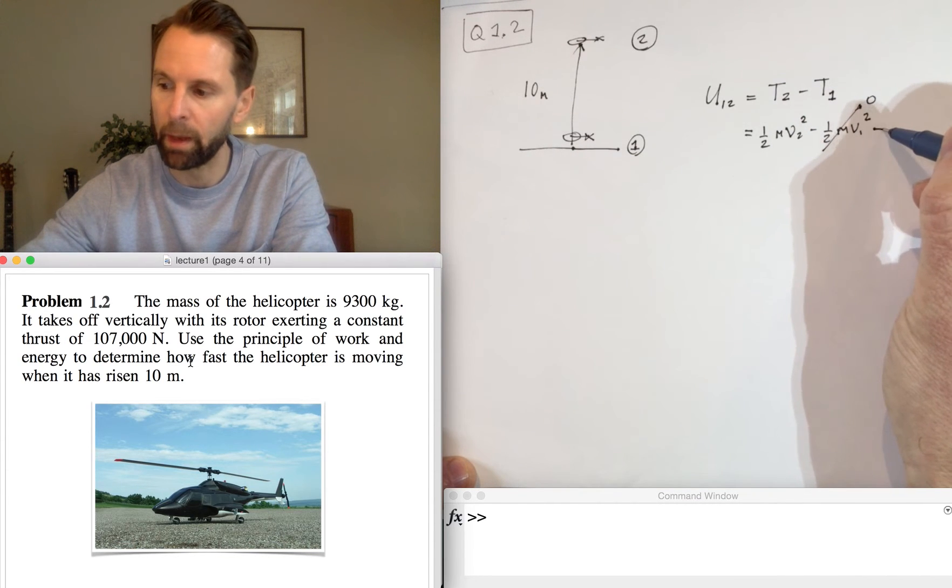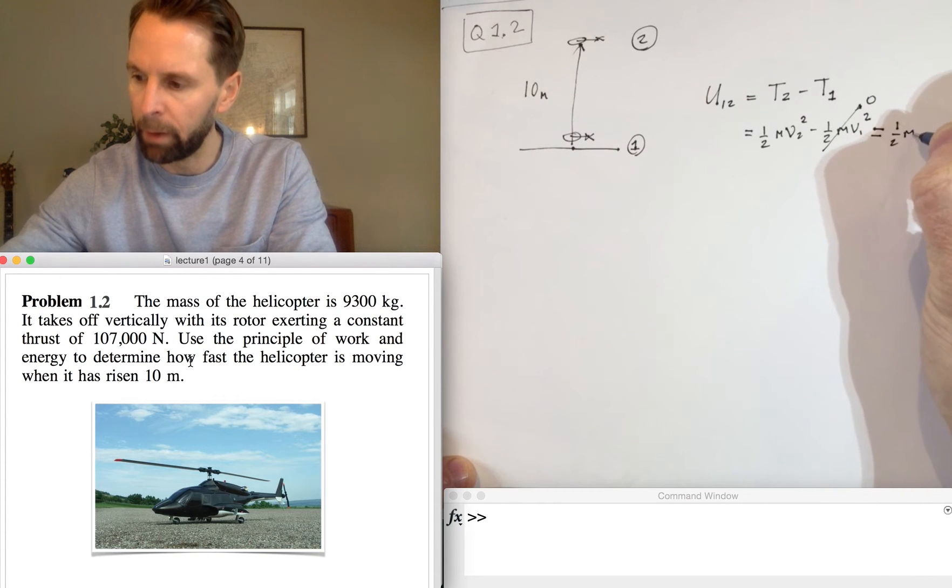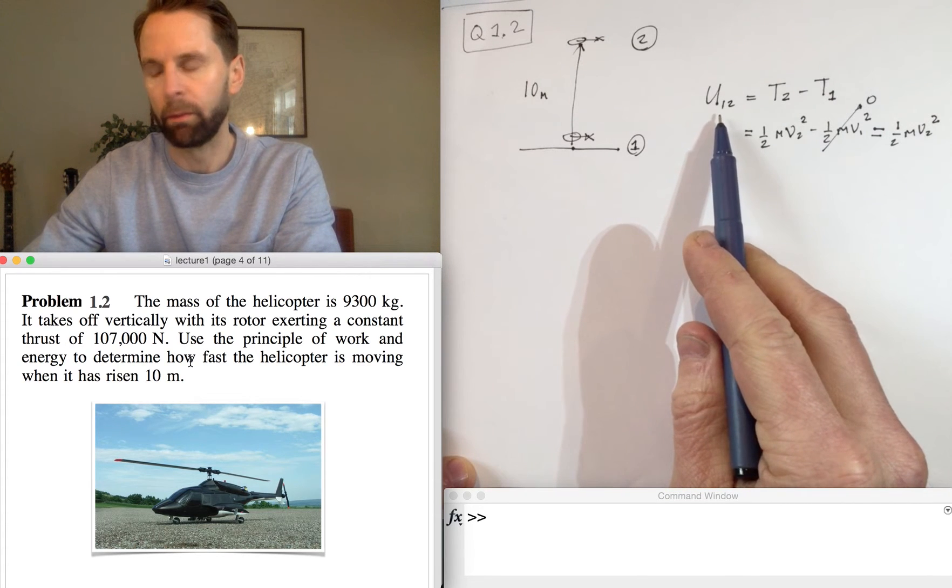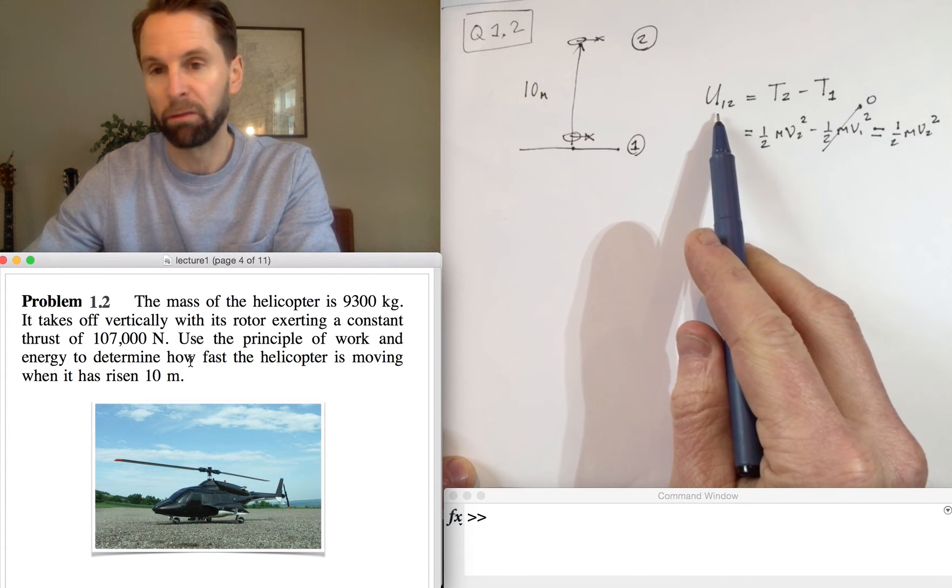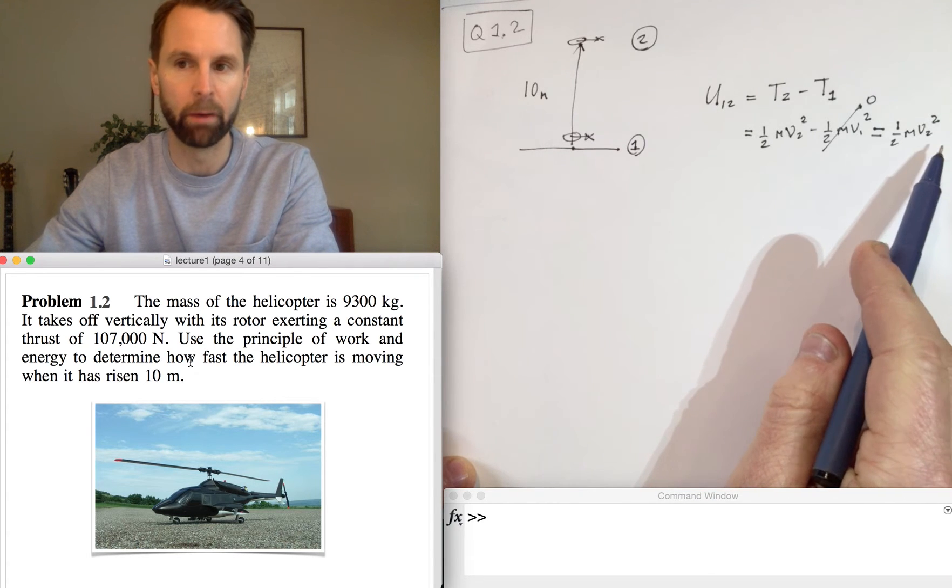So we are left with simply 1/2 m v2^2. If we can work out what the work done on the resultant forces is, then we can work out what the speed is, because we know the mass.